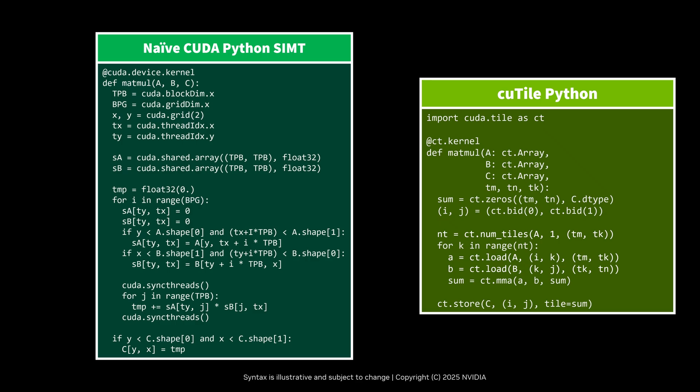Qtile is simpler and higher productivity than traditional SIMT programming. You should be able to get good performance faster with it. However, you do have less control than with SIMT.